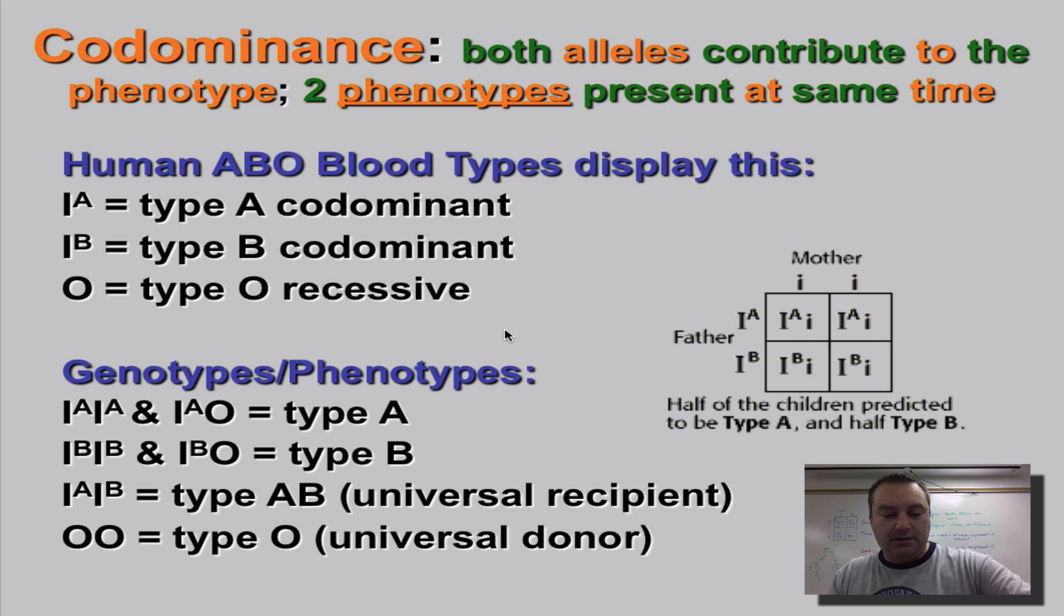Human blood types show codominance. Now, in codominance, both alleles will contribute to the phenotypes. In other words, two phenotypes are expressed at the same time. So in our human's ABO blood type, remember, humans can have either type A, type B, and type O. They show codominance.